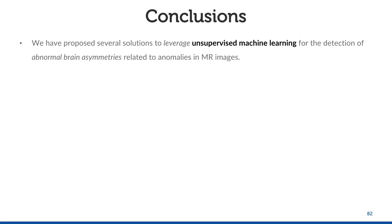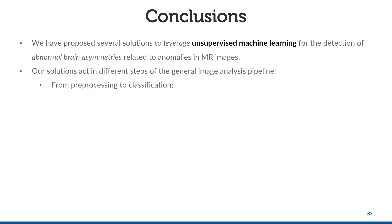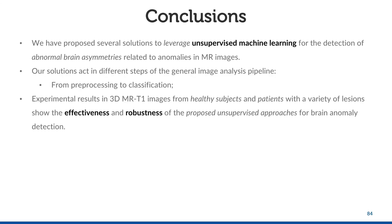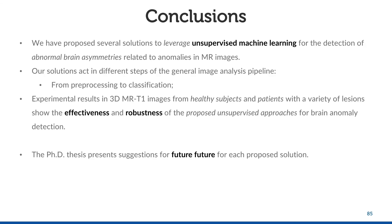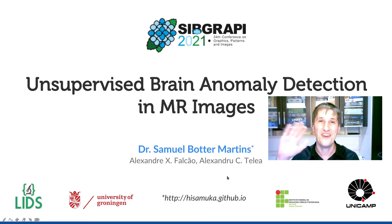In conclusion, we have proposed several solutions to leverage unsupervised machine learning for the detection of abnormal brain asymmetries related to anomalies in MR images. Our solutions act in different steps of the general image analysis pipeline, from preprocessing to classification. Experimental results on MR T1 images from healthy subjects and patients with several lesions show the effectiveness and robustness of the proposed unsupervised approach for brain anomaly detection. The PhD thesis presents suggestions for future work for each proposed solution. Thank you very much.